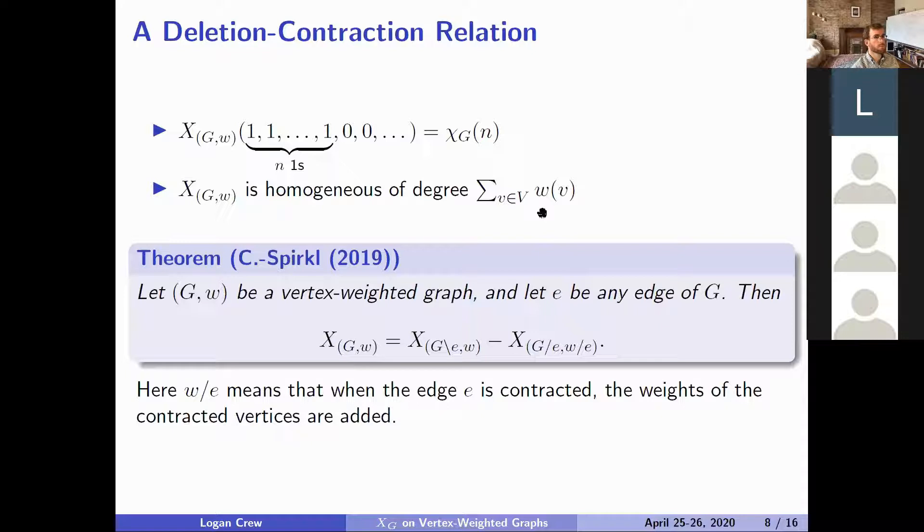How we're going to do that is when we contract an edge in the graph, we're going to add the weights of the endpoints of the edge. The new vertex is going to get the sum of those weights. If we do that, then we have a deletion-contraction relation that functions essentially like the chromatic polynomial does. We have an X_G_W that'll be equal to X_G delete E_W minus X_G contract E with this contracted weight function.